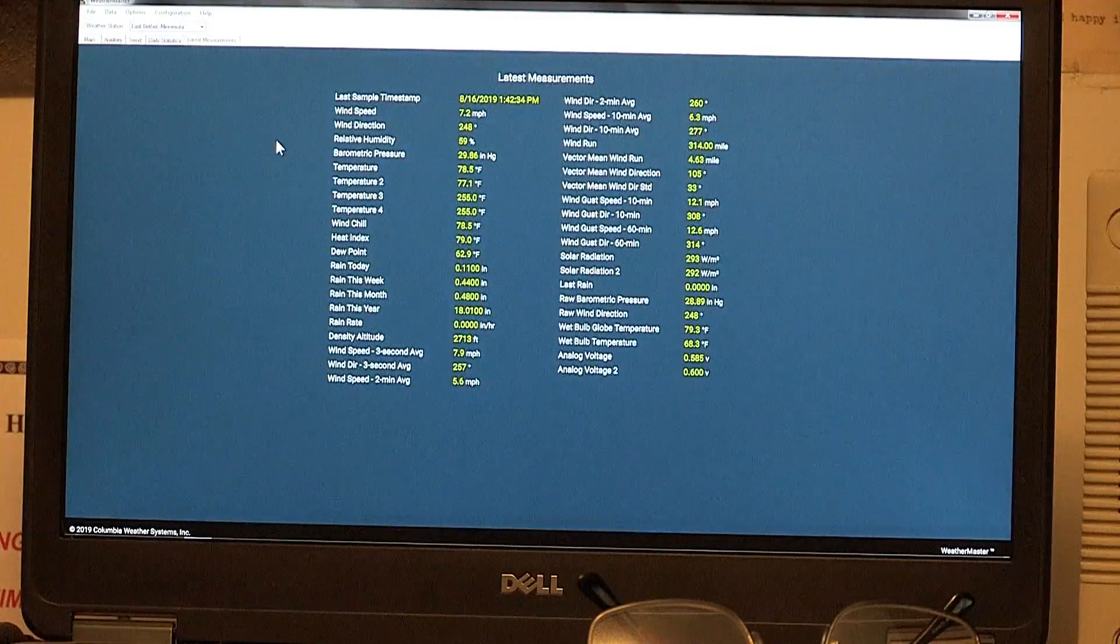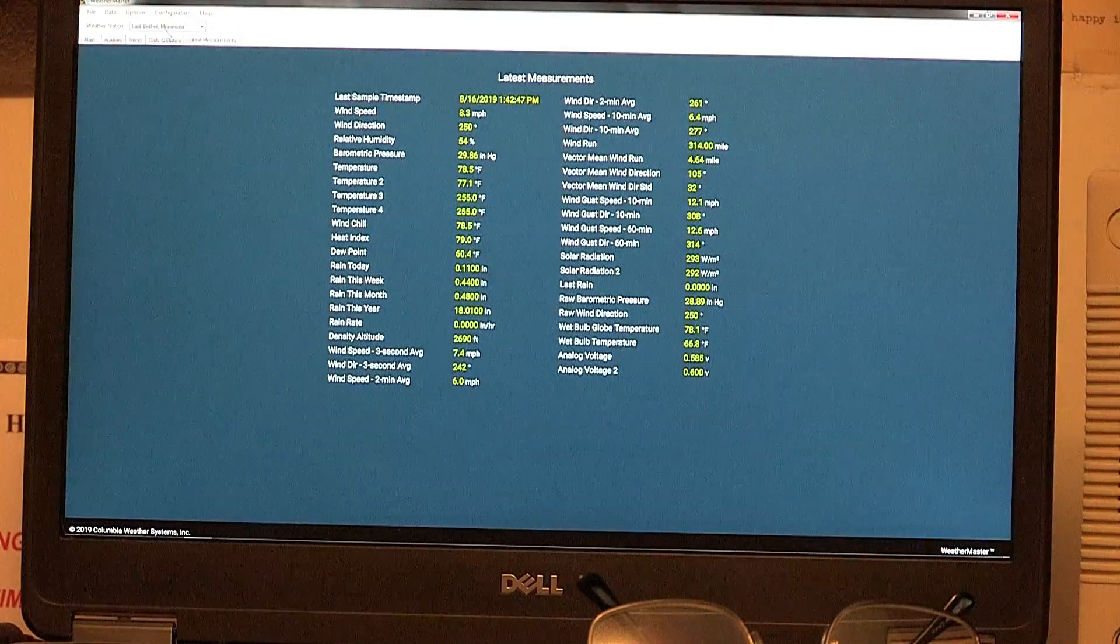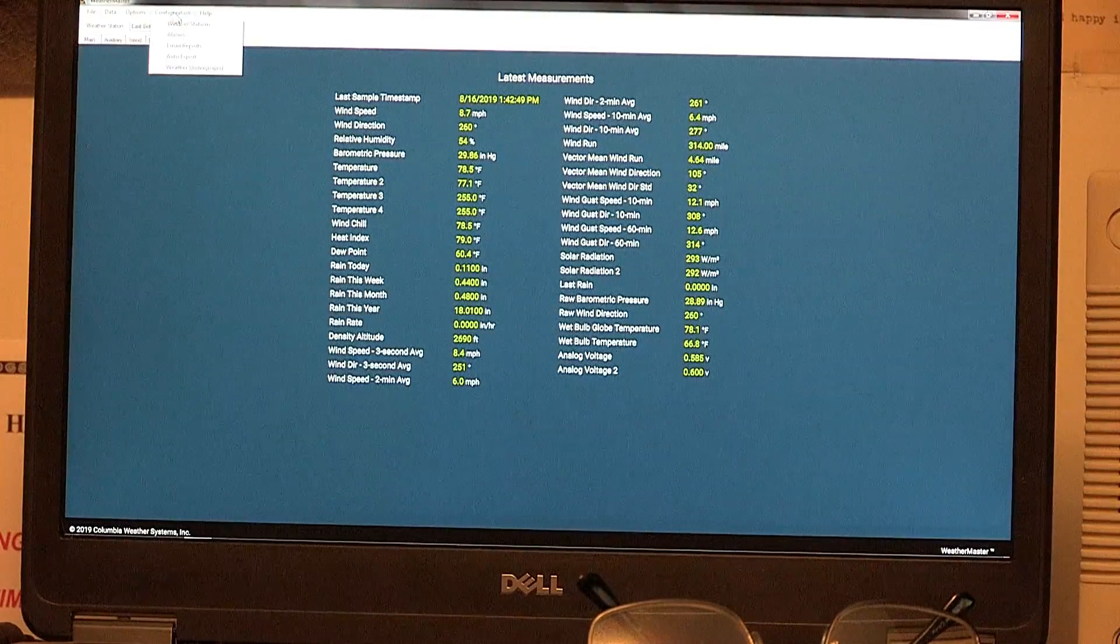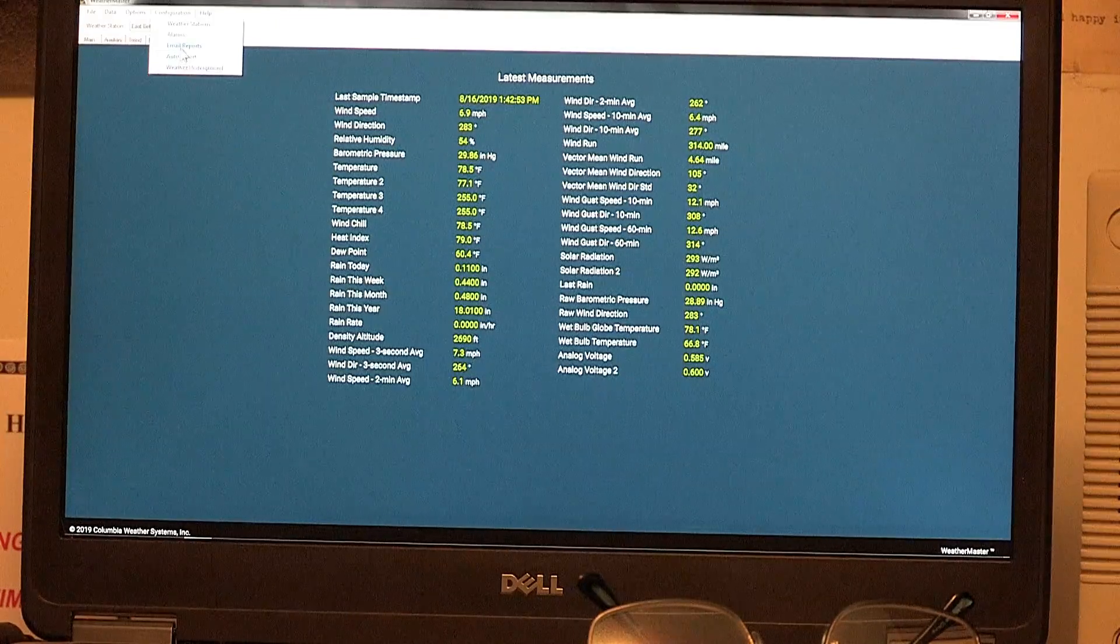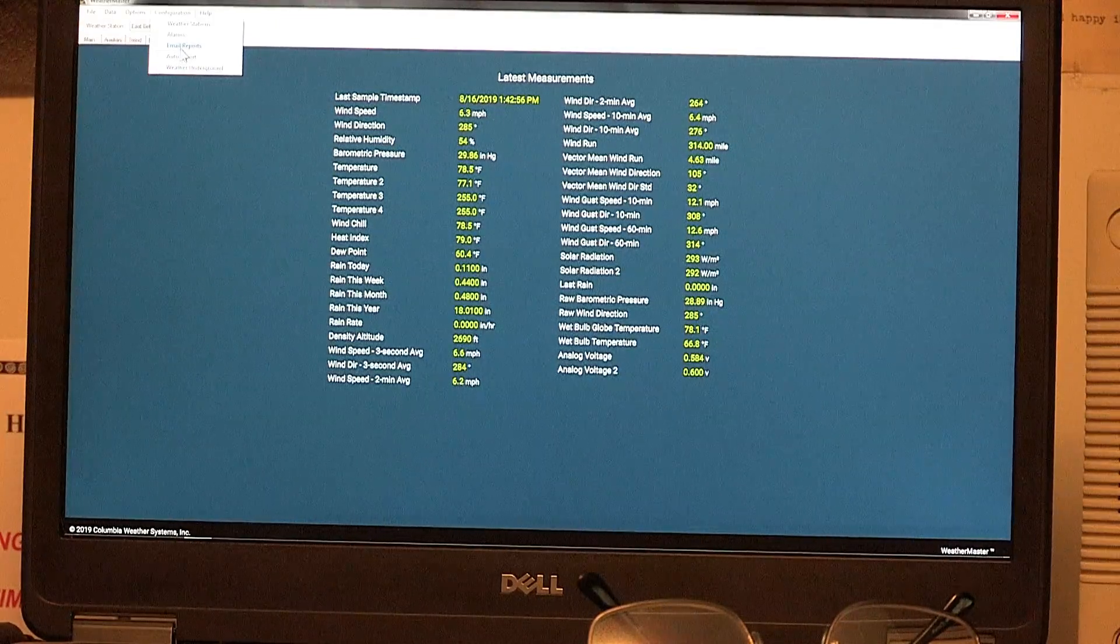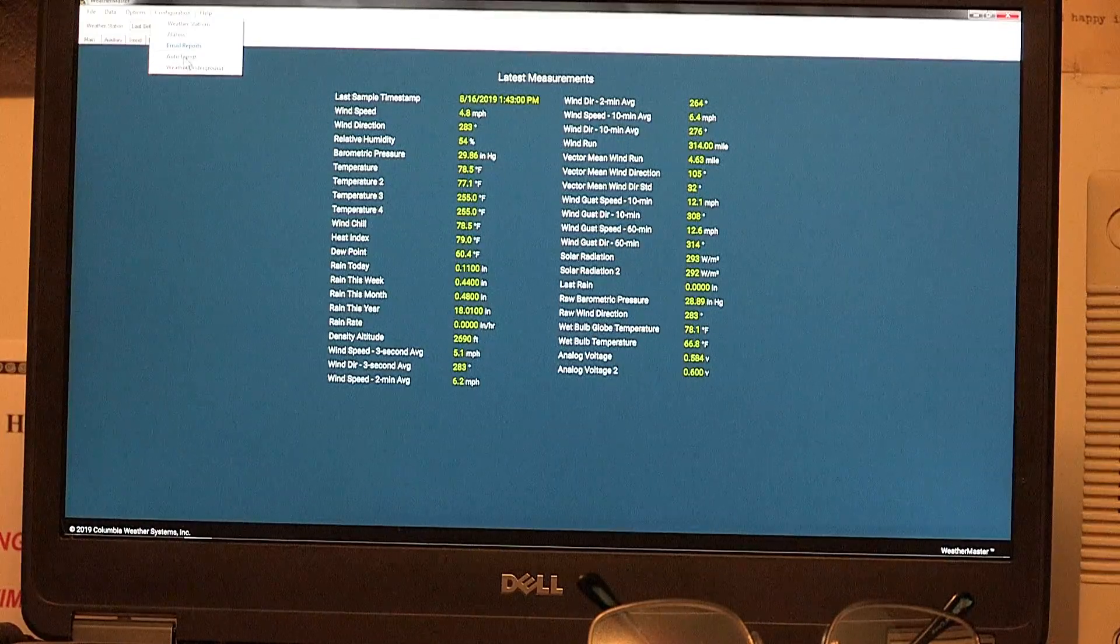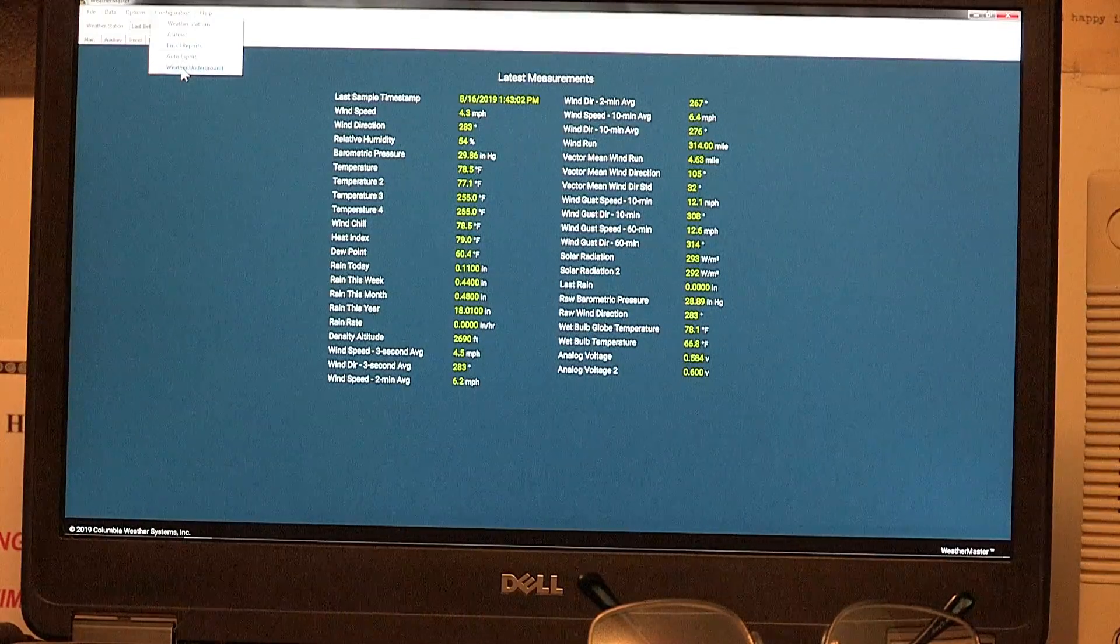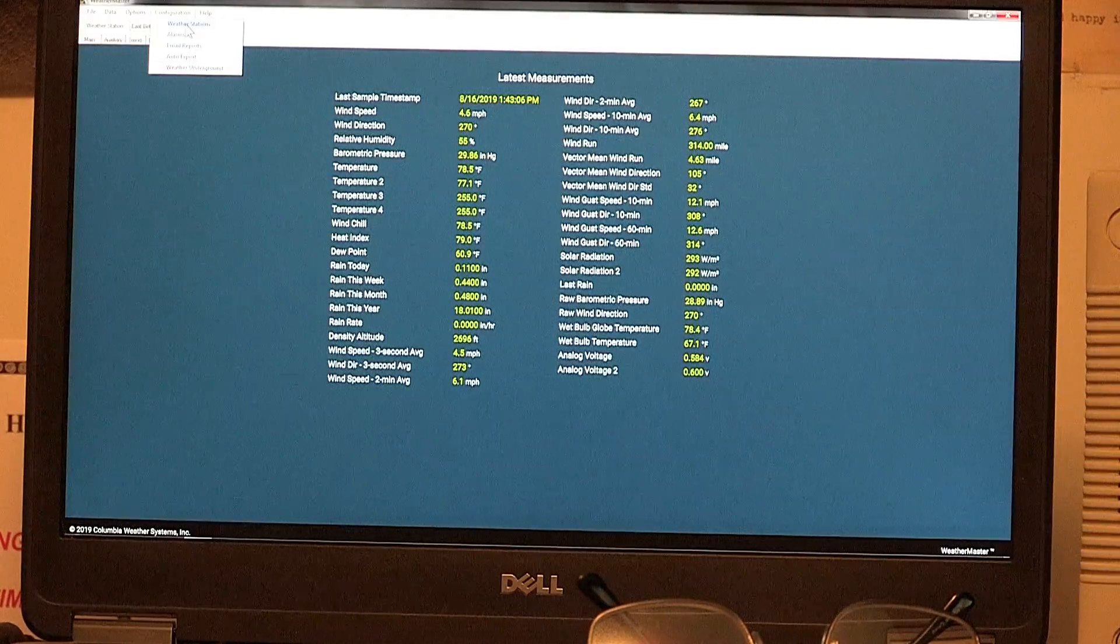And finally, we have these raw values here. And then you can configure it for emailing. You can email weather reports or send text messages to your smartphone. And it also is available to put readings on Weather Underground, which I have also activated.